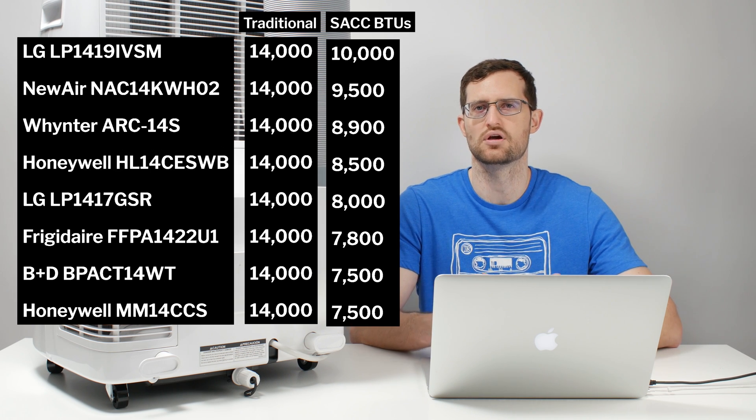And keep in mind that all of these units were previously simply called 14,000 BTU units. So at the lower end of the range, we have a unit from Black & Decker, a unit from Honeywell, a unit from Frigidaire. We have quite a number of different brands represented.